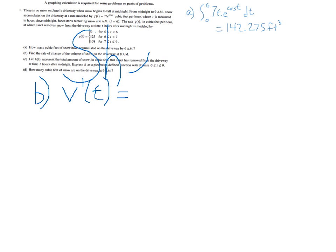So V'(t) is going to be the rate that the snow is falling, which is 7te to the cosine of t. Then I of course need to subtract away the snow that Janet is removing, which at 8 a.m., she's removing 108 cubic feet per hour. So we're just going to subtract away 108. Because f, the 7te to the cosine of t, that's already in cubic feet per hour, and so is the 108. So I just subtract those two.